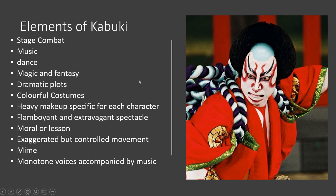Some elements of kabuki we're going to be looking at include stage combat, music, dance, magic and fantasy, dramatic plots, colorful costumes, heavy makeup, flamboyant and extravagant spectacle, a moral or lesson, and exaggerated but controlled movement. There's also mime and pantomime, and monotone voices accompanied by music. The actual voice of the actors was not the main draw — it was the music, the bright costumes, the bright makeup, and the beautiful way they were moving and dancing.